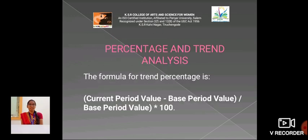The next one is Percentage and Trend Analysis. The formula for trend percentage is current period value less base period value, into 100.